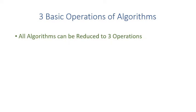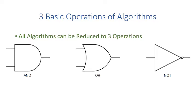There are hundreds of algorithms, but the good news is all algorithms can be represented by three basic operations — we can reduce all algorithms to three fundamental operations. The first one is the AND operation. In logic design, suppose we have a binary input — either 1 or 0. AND says that if the first input is 1 and the second is 0, then the output is 0. It only outputs 1 if both inputs are 1.